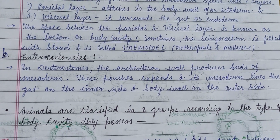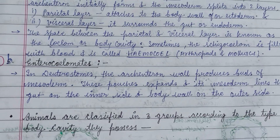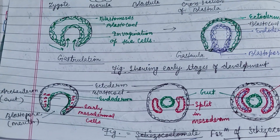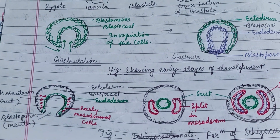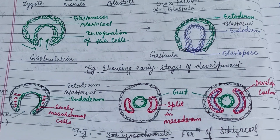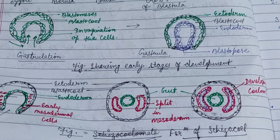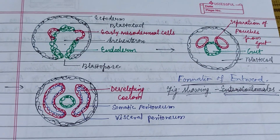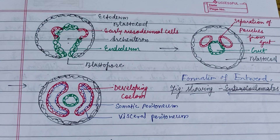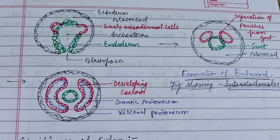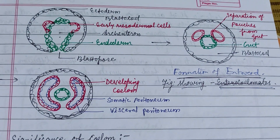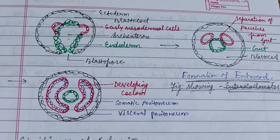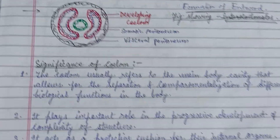In enterocoely, found in deuterostomes, the archenteron wall produces outpouching bursts of mesoderm. These pouches expand, with mesoderm lining the gut on the inner side and the body wall on the outer side, forming enterocoelomes. The figure shows schizocoely formation, where early mesodermal cells accumulate and split into two layers to form the mesoderm. The enterocoely figure shows the archenteron with a bud-like structure of early mesodermal cells forming the mesoderm lining of the developing coelom.